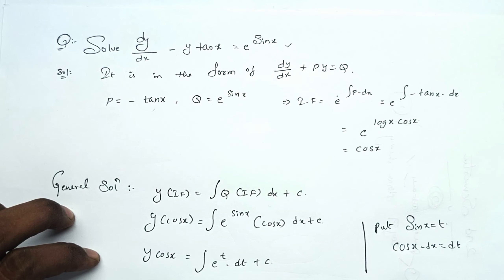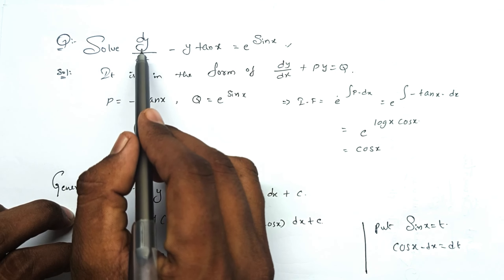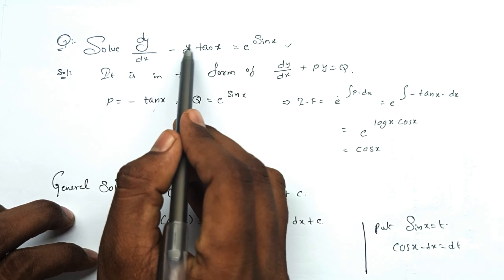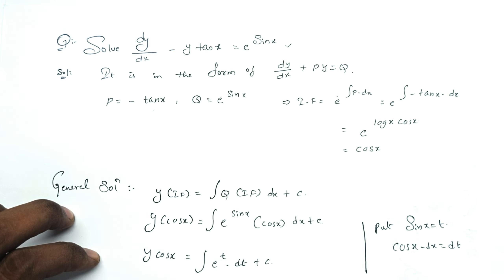So, from the standard form dy/dx plus Py equals Q, we identify P equals negative tan x and Q equals e^(sin x).